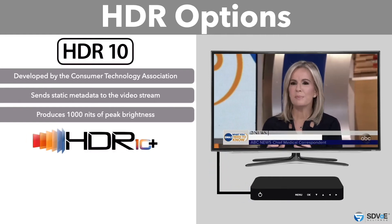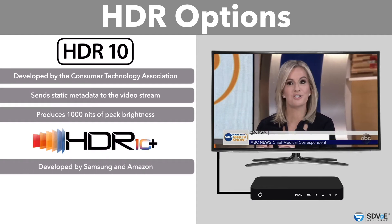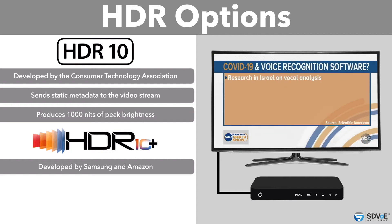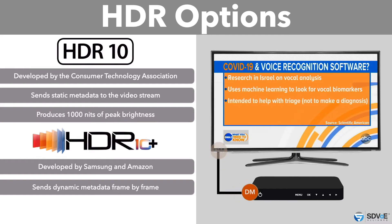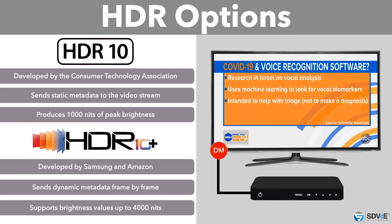HDR10+ was developed by Samsung and Amazon. HDR10+ works differently to HDR10 by sending dynamic metadata, allowing TVs to calibrate the best possible picture frame by frame. This makes the picture look more realistic, and the format supports brightness values up to 4,000 nits.